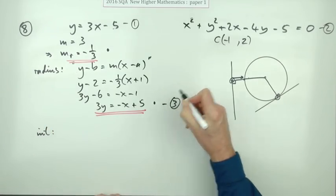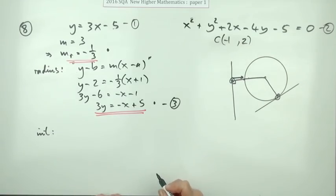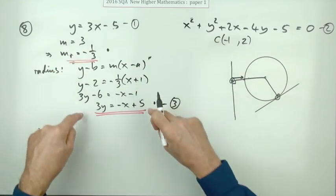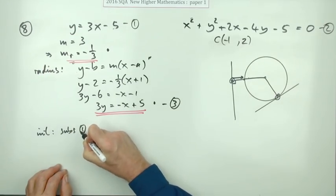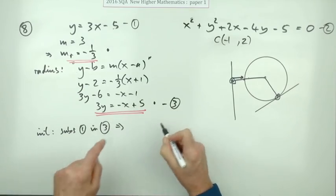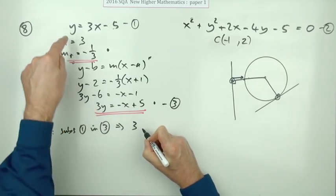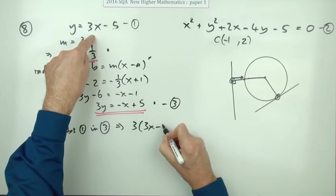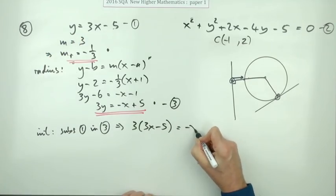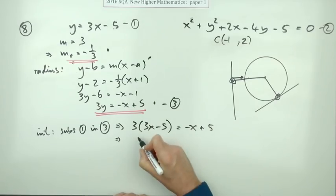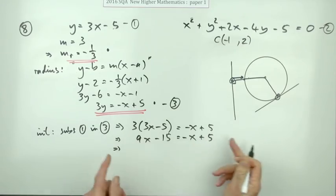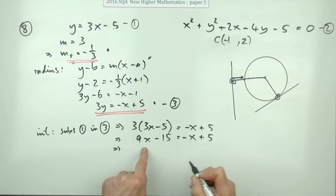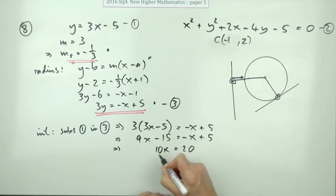Now find the intersection. We'll call this 3 now because I've got names for those other two. Well, you can either use, for your simultaneous equations, you can either use elimination. Or since that reads y equals, I'm just going to do a substitution. Substitute 1 in 3. Which means, whereas 3 reads 3y, this says you can replace y with 3x minus 5. That should equal negative x plus 5. So you've got 9x minus 15 is negative x plus 5. Bringing them across. Add 1 to make 10x. Add 15 to make 20. So that x equals 2.